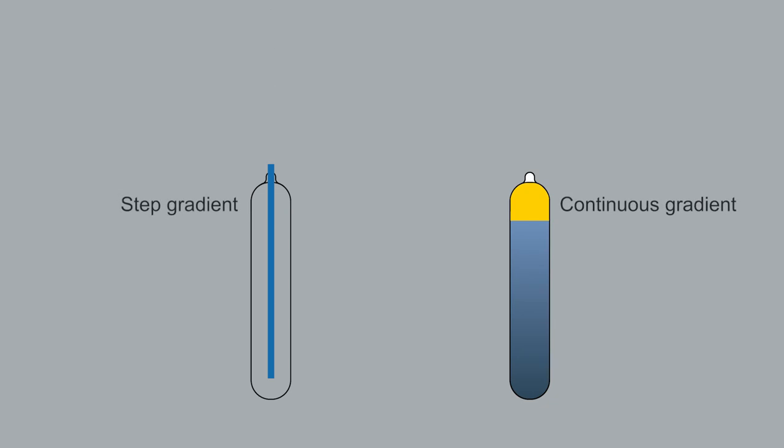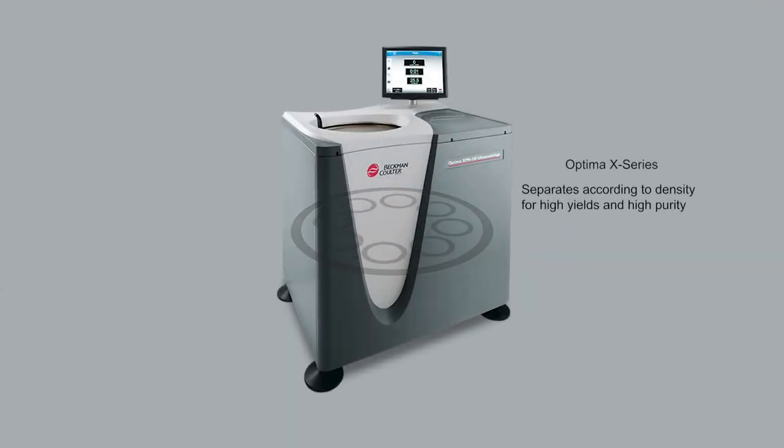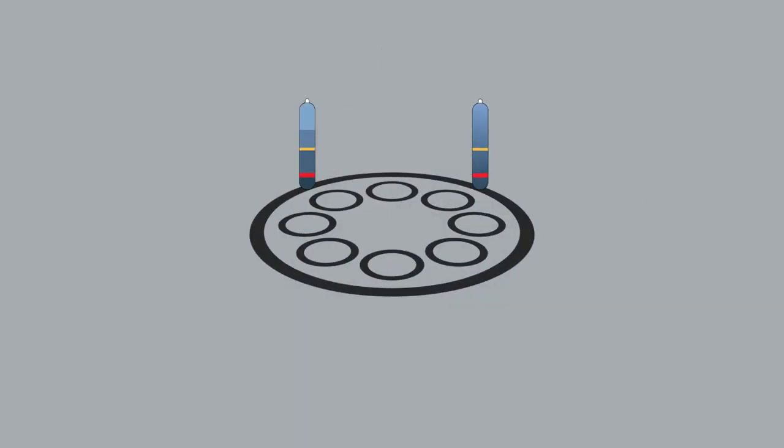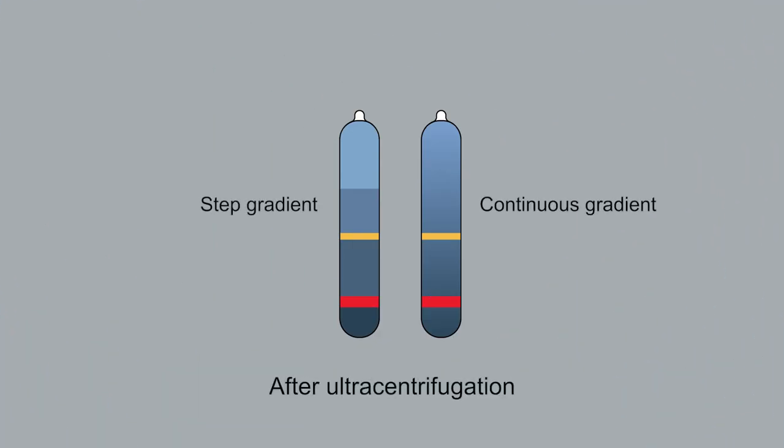Next, particle separation through density gradient ultracentrifugation provides high yields of capsids with high purity. For both step and continuous gradients, the desired viral vector and contaminants can be found at discrete locations corresponding to their respective densities.